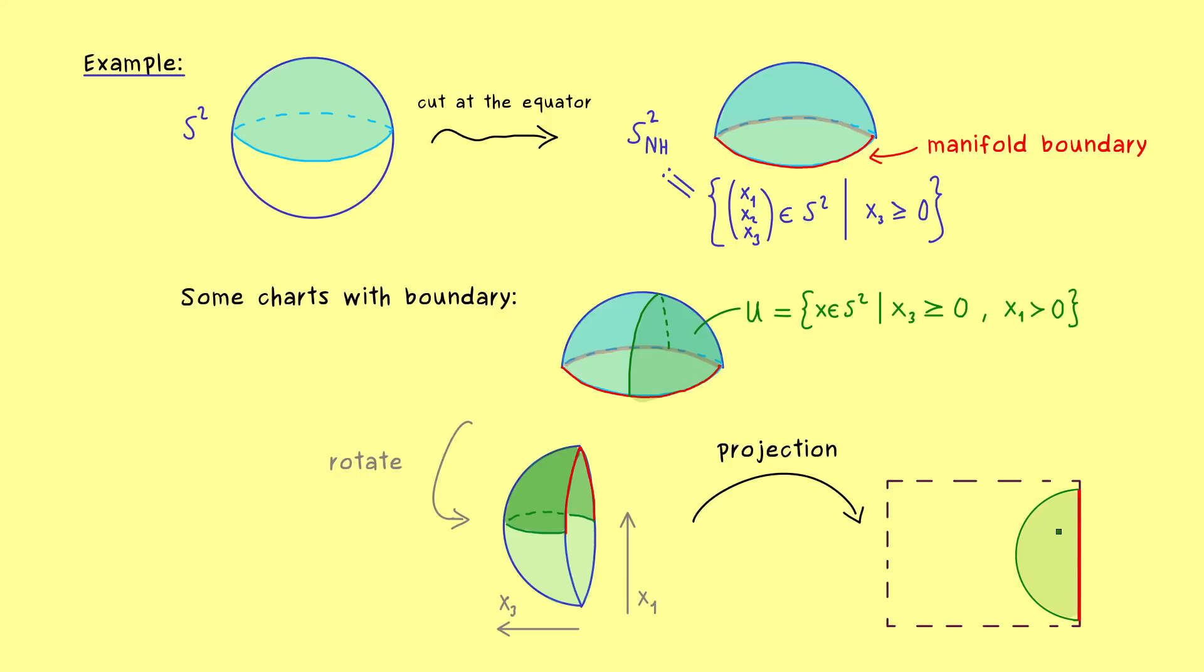So please note, this boundary part here is part of our open set on the right-hand side, simply because of this inequality. But the circle line is not, because we said that x_1 has to be greater than 0.